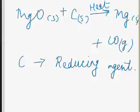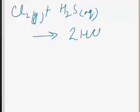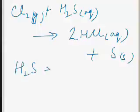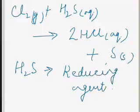Another example: Cl2 (g) reacts with H2S (aq) to produce 2HCl (aq) + S (s). In this reaction, chlorine is reduced to hydrochloric acid and H2S is the reducing agent, because it is able to add hydrogen to chlorine.